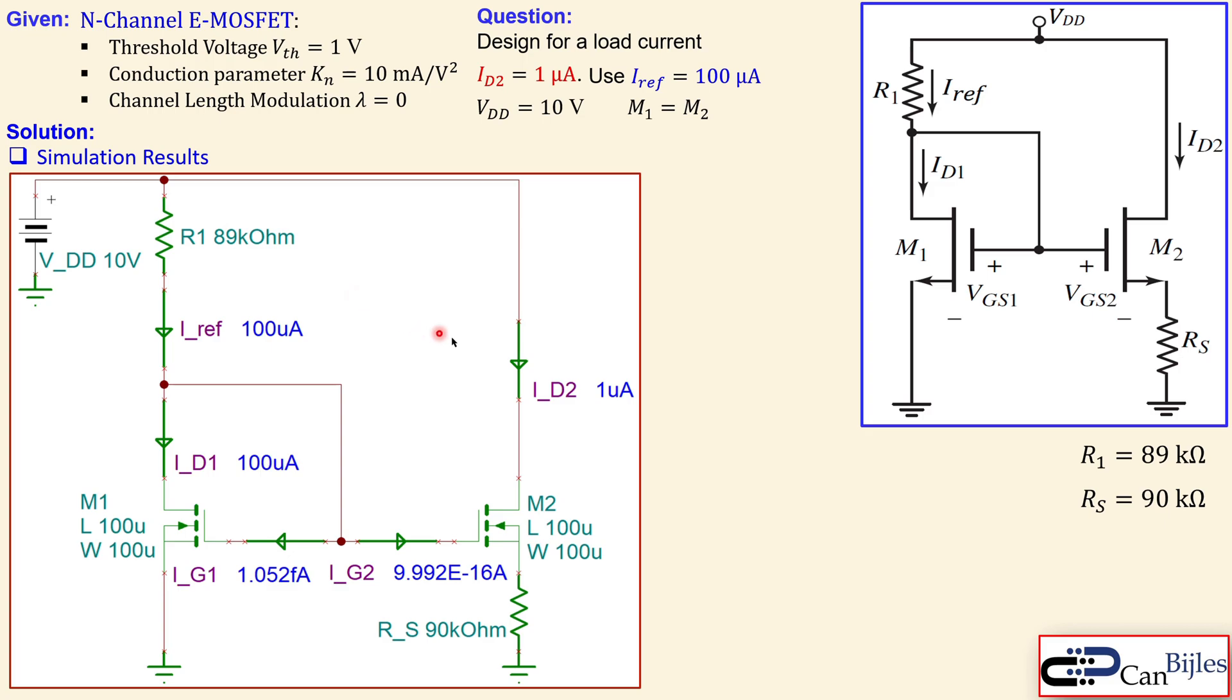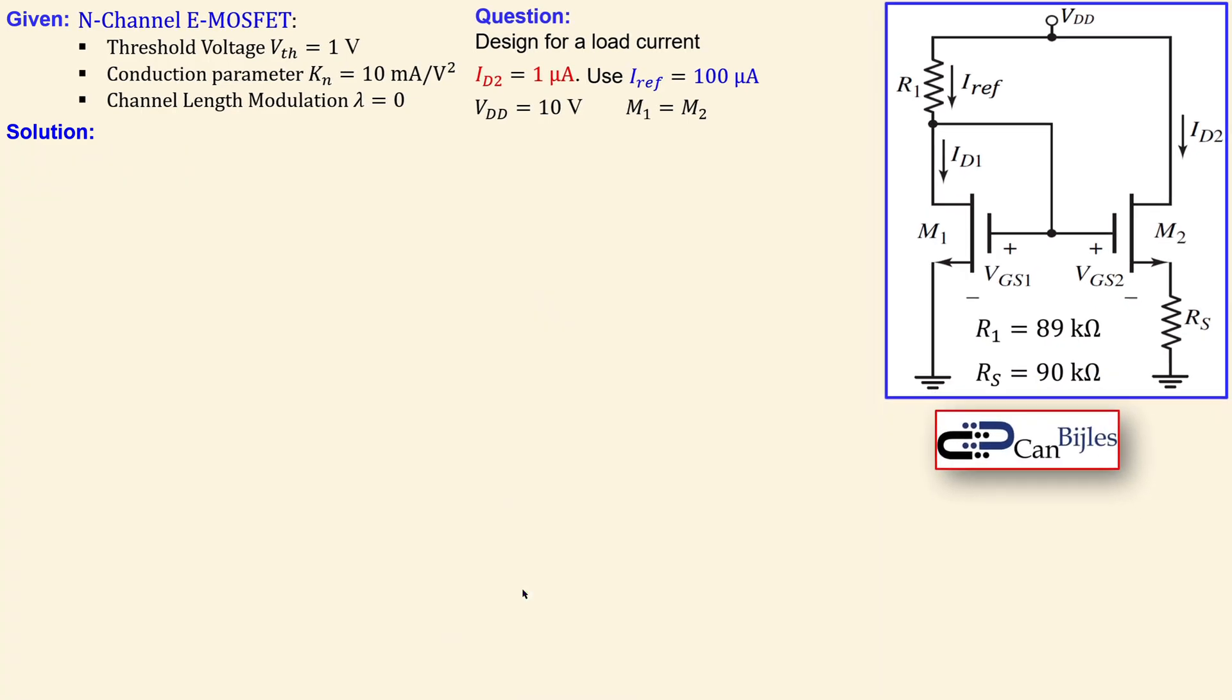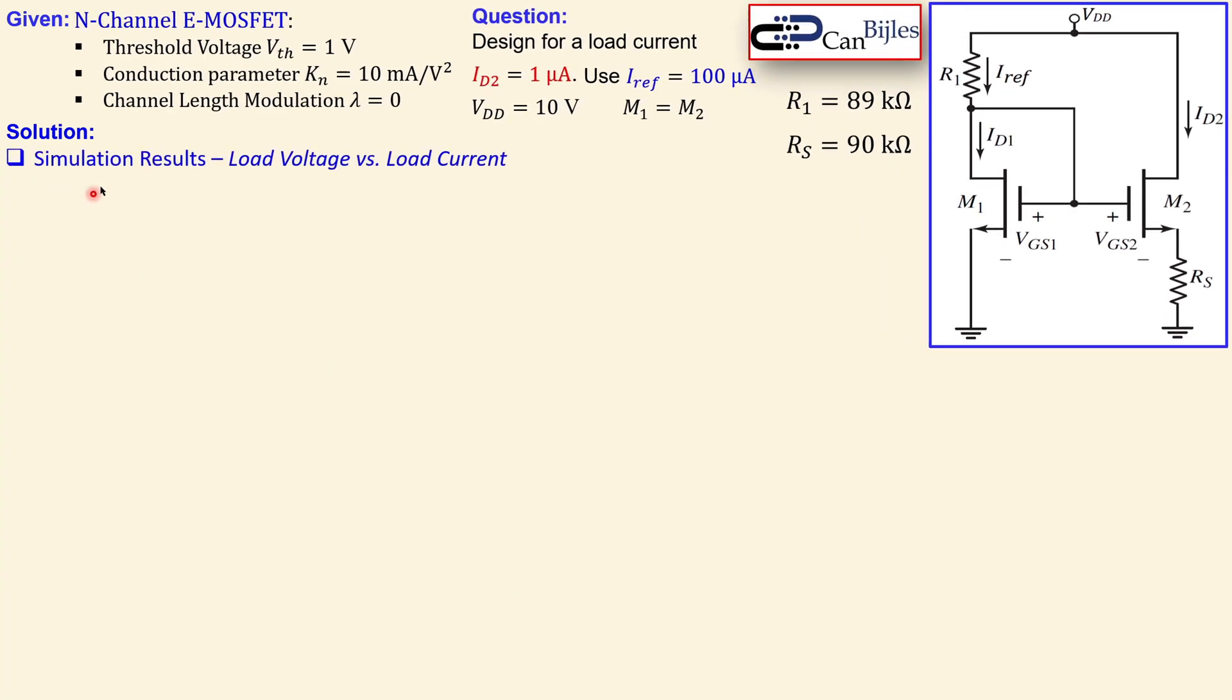And that is also one of the effects of the Widlar current source, to make the small currents using relatively small resistor values. So this is as expected, but we can also look at a different analysis, which is the load current versus load voltage.